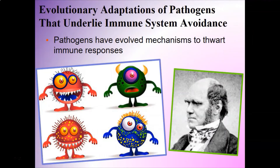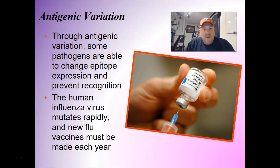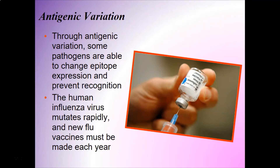There are things out there helping pathogens avoid our immune system, and they've been evolving as long as we have. Pathogens have evolved mechanisms to thwart immune responses. Through antigenic variation, some pathogens are able to change epitope expression and prevent recognition. Once your immune system identifies the bad guy and starts to attack, some pathogens can just change their epitopes - change that antigen a little bit - and now our immune system has to learn all over again who to fight. A good example is the flu: the human influenza virus mutates rapidly, which is why every year we need a newer flu vaccine, because it often changes into something we're not quite ready to fight.